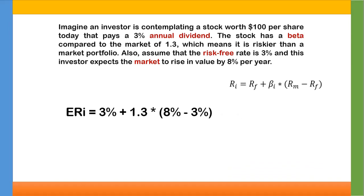Now let's do the math. The expected rate of return (ERI) calculation starts with the risk-free rate, which is 3% as given. So RF equals 3%. Next, we find beta, which is given as 1.3 — not 1.3%, but simply 1.3, as beta is never expressed as a percentage.